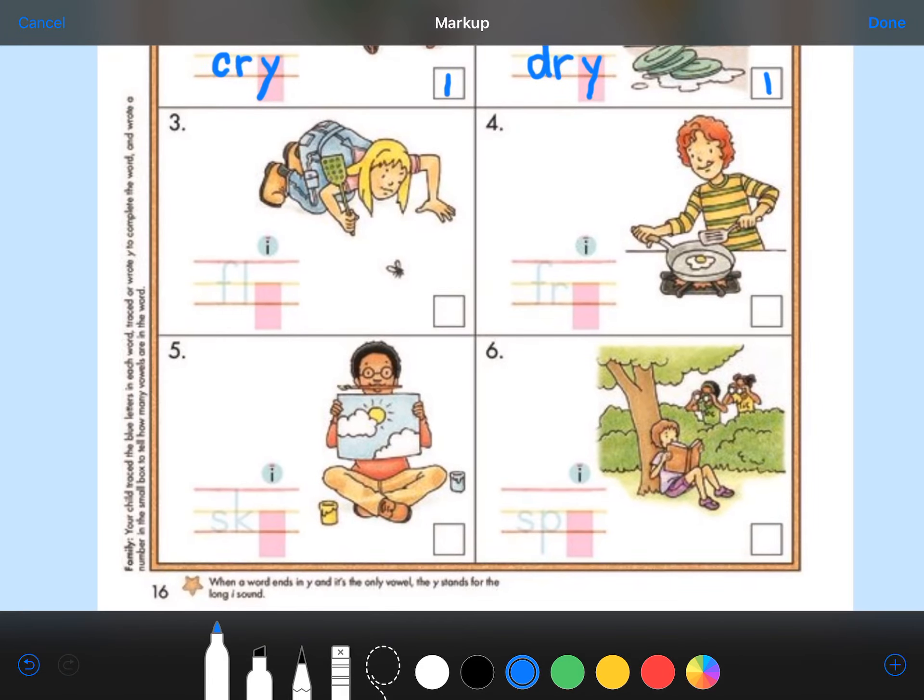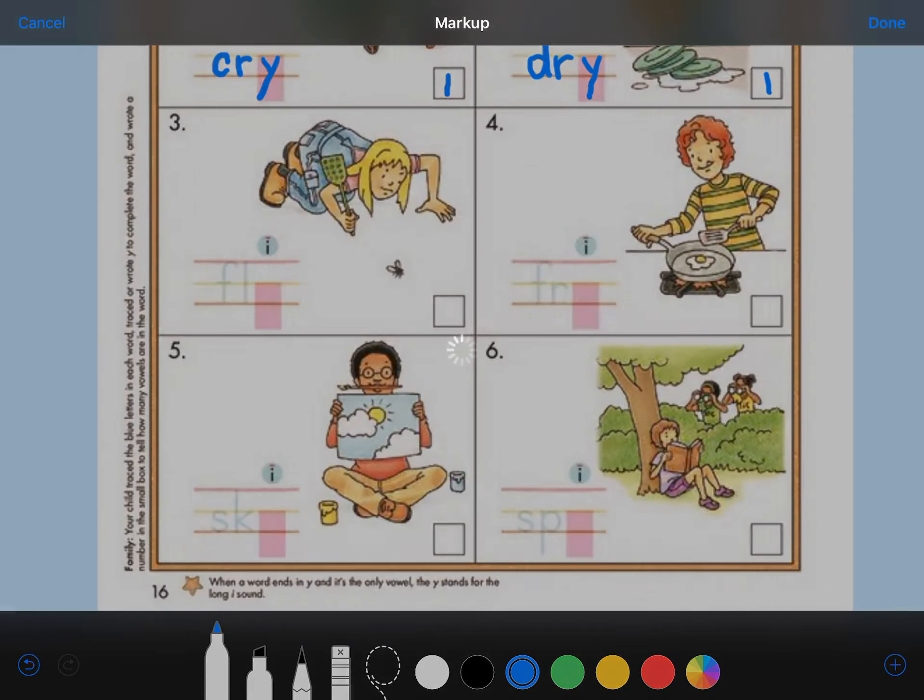Now, for numbers three, four, five, and six, I want you to complete it by tracing the letters on the handwriting lines, adding Y to each word, and making sure that you write the number of vowels that each word has. Make sure you read the word aloud to yourself. Remember, the long I in the blue circle is to remind you that the Y stands for I in each word. Go ahead and pause this right now until you're finished.